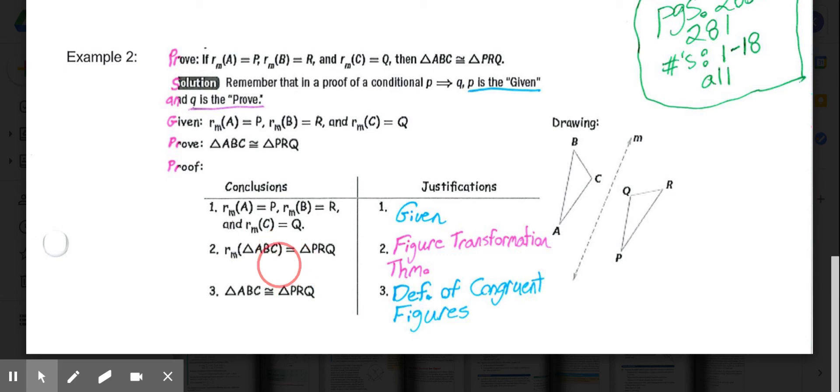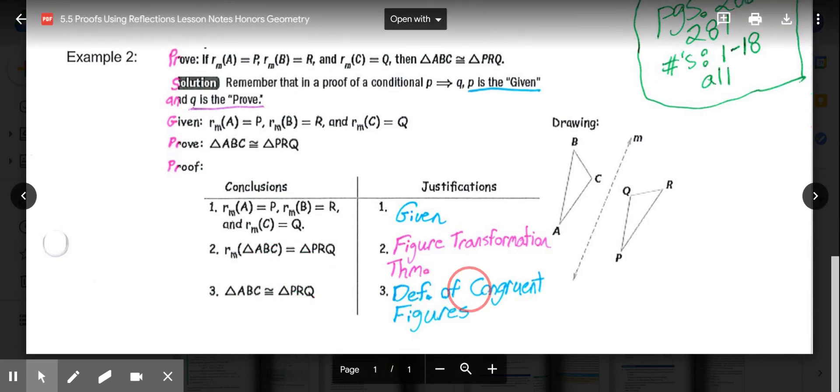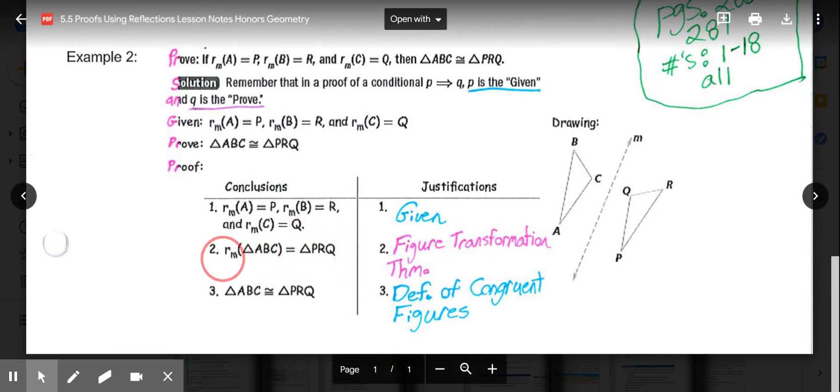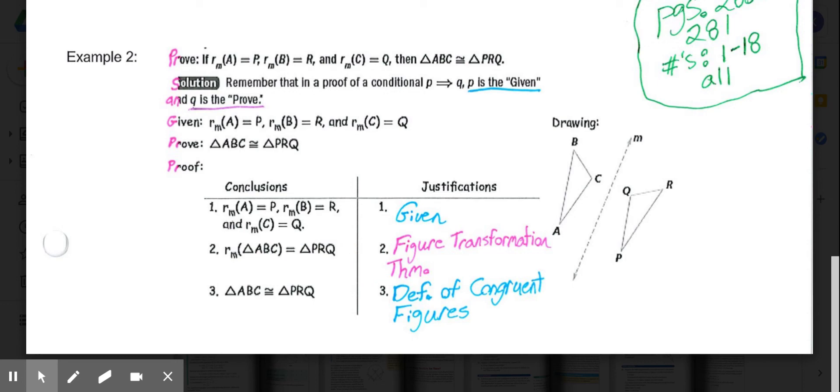And then the last part of this would be our final conclusion that triangle ABC is congruent to triangle PRQ, because in step two, we establish that this reflection is a type of transformation. And according to our definition of congruent figures, any figure that undergoes a transformation is going to be congruent to the original. So once we've established that this was a transformation, we can then establish that those two triangles are congruent from the definition of congruent figures. If we didn't establish it was a transformation in step two, then we wouldn't be able to use the definition of congruent figures.